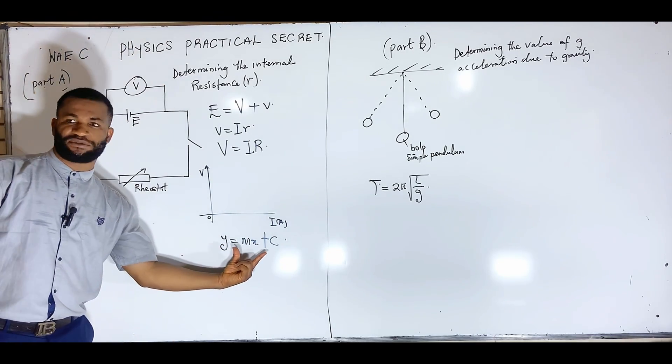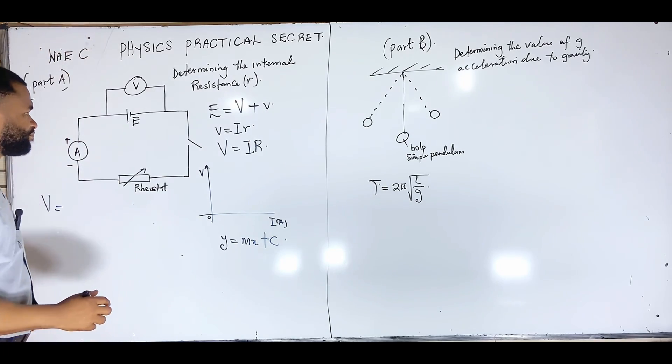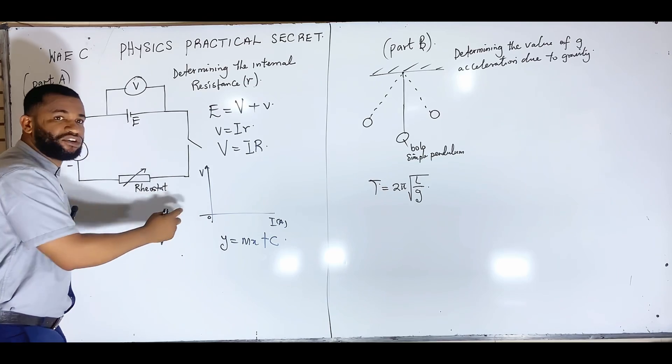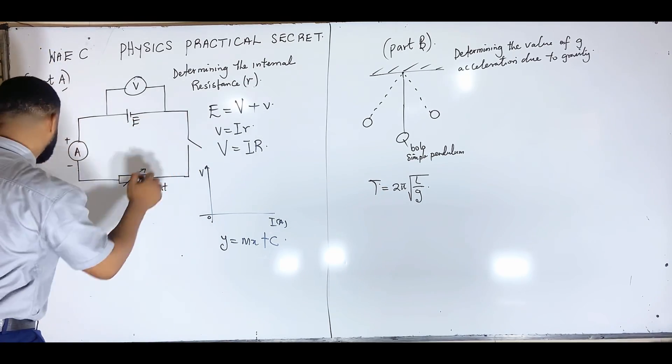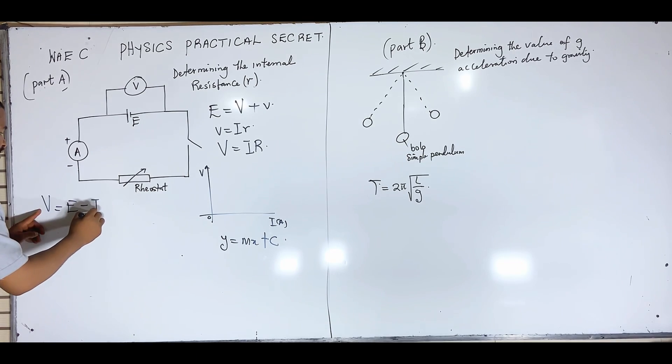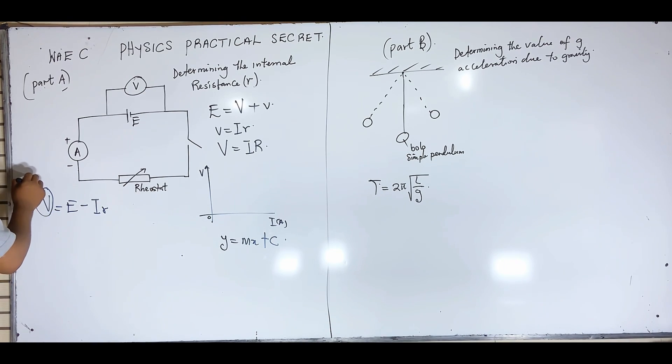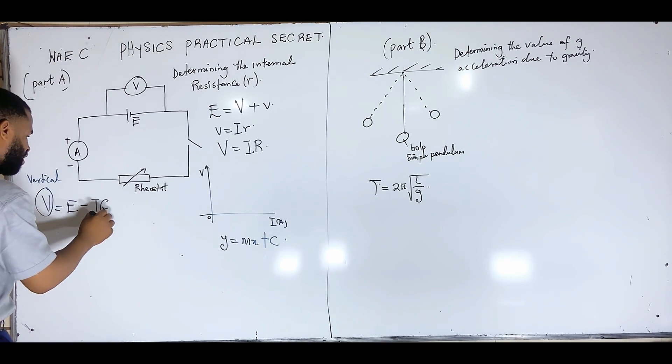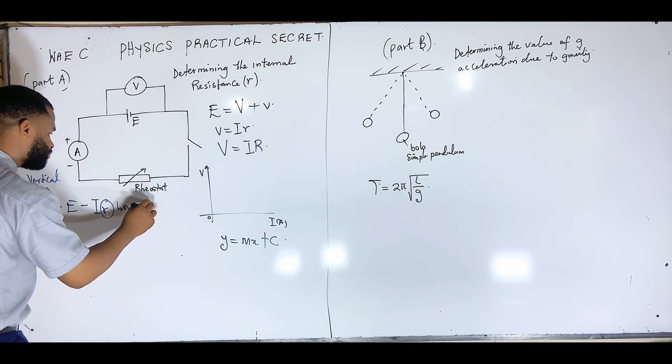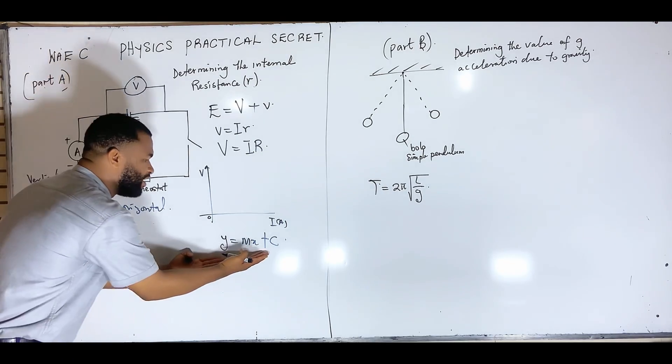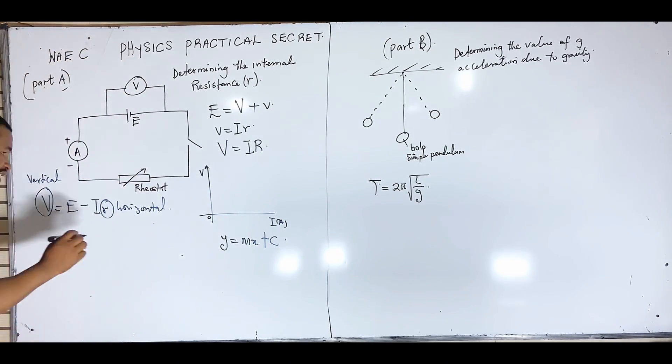The first thing you should know is what am I going to plot on the vertical and what am I going to plot on the horizontal? When you answer this question, you now compare it with this equation. But before then, let us make V the subject formula because the one on the vertical must be the subject formula. That is going to be V equal to E minus current multiplied by R.